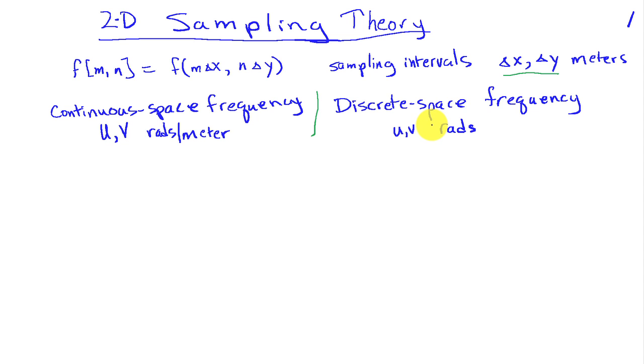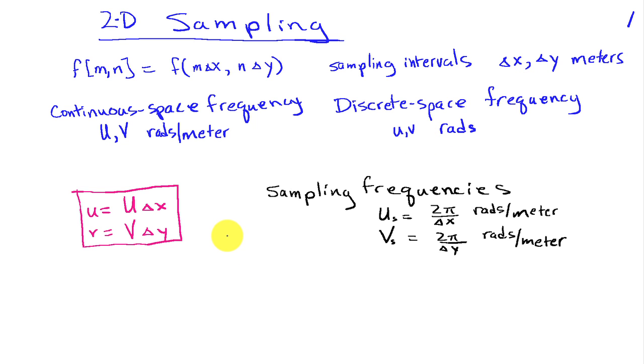Just as we did in the continuous time and discrete time case, we're going to relate the Fourier representations for the continuous space signal and the sampled discrete space signal, and that'll help us understand what's happening with sampling. To begin, recall that in continuous time we had the discrete time frequency omega equal to continuous time frequency uppercase omega times the sampling interval.